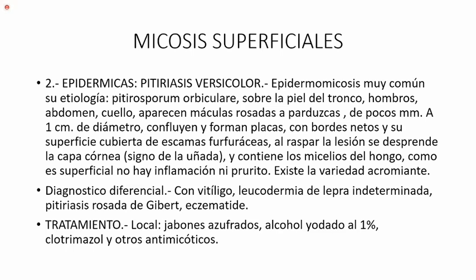Las epidérmicas están solo en piel, no están alrededor de los poros. Entre estas está la pitiriasis versicolor, epidermomicosis muy común. Su etiología es el Pityrosporum orbiculare. Sobre la piel del tronco, hombros, abdomen y cuello aparecen máculas rosadas o parduscas de pocos milímetros a un centímetro de diámetro. Confluyen y forman placas con bordes netos cubiertas de escamas furfuráceas, o sea delgaditas. Al raspar la lesión se desprende la capa córnea: ese es el signo de la uñada. Como es superficial, no hay inflamación ni prurito. Existe la variedad acrómica también, que se parece al vitíligo, pero es una pitiriasis versicolor.